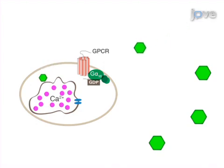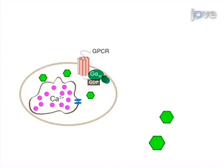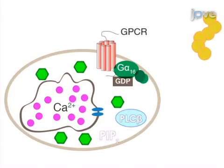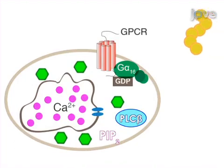As a second step, the transfected cells are loaded with the calcium-sensitive dye Fluo4, which detects the release of calcium from intracellular stores through an increase in fluorescent signal upon calcium interaction.